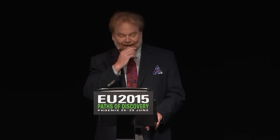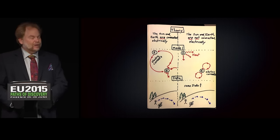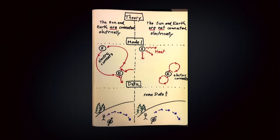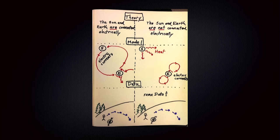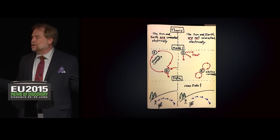To look at the difficulty of verifying new scientific models, we can look at another instance in history where there were disagreements about the fundamental electrical nature of our universe. In the late 1800s, Christian Birkeland had an intuition that the earth and the sun were electrically connected. This was not the prevailing idea at the time — the prevailing idea was that the earth and the sun were electrically isolated from each other. So we have two theories: on the one hand, the earth and sun electrically connected; on the other, electrically isolated.